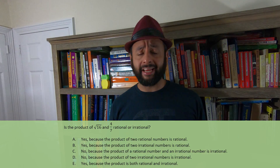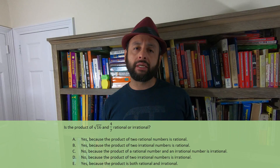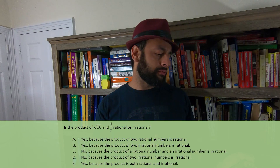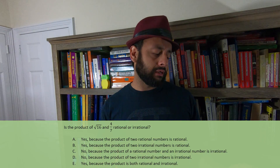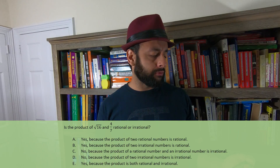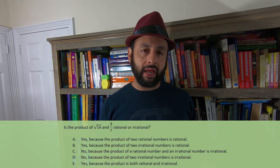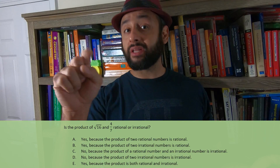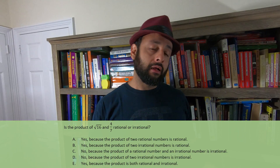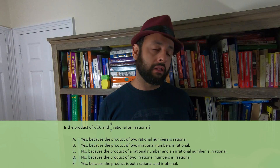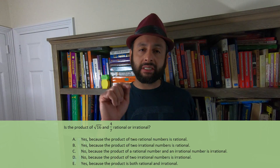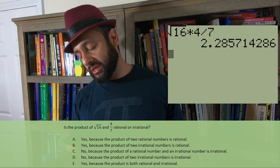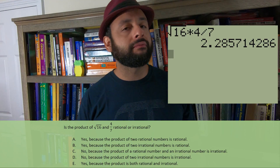Here's why the answer surprises a lot of students. Many students take radical 16, figure out it's 4, then multiply by 4/7 in their calculator to get 16 over 7. Then they press enter to get the decimal expansion, don't see a clear pattern, and conclude it's irrational.